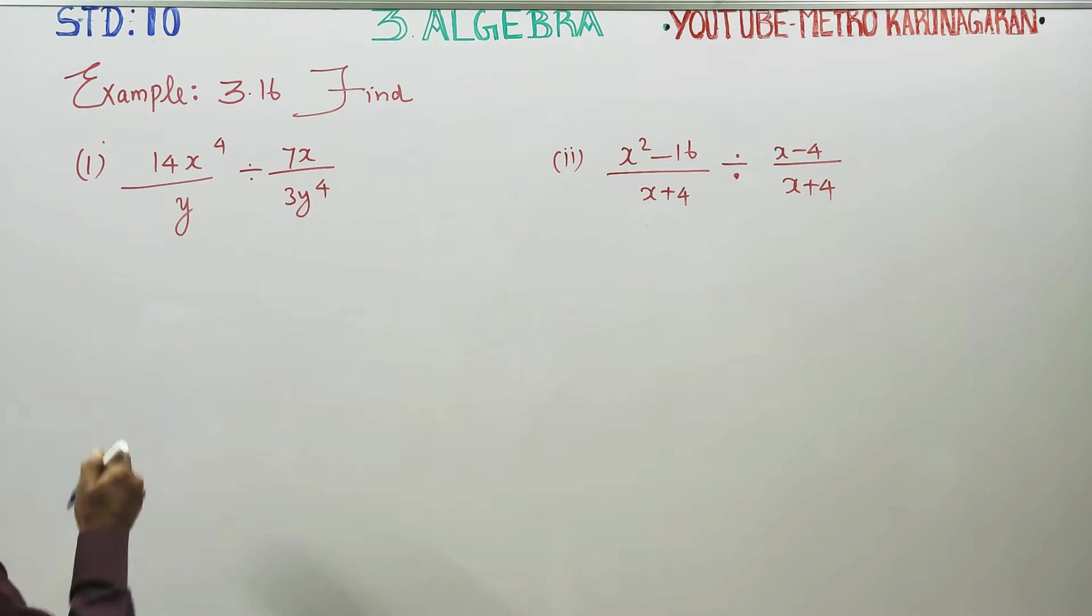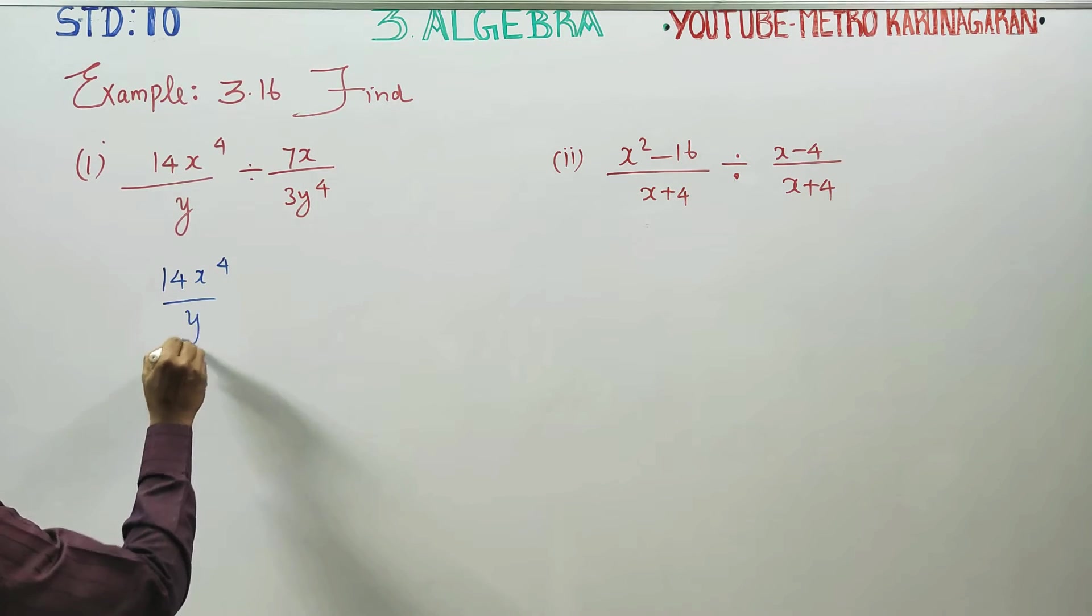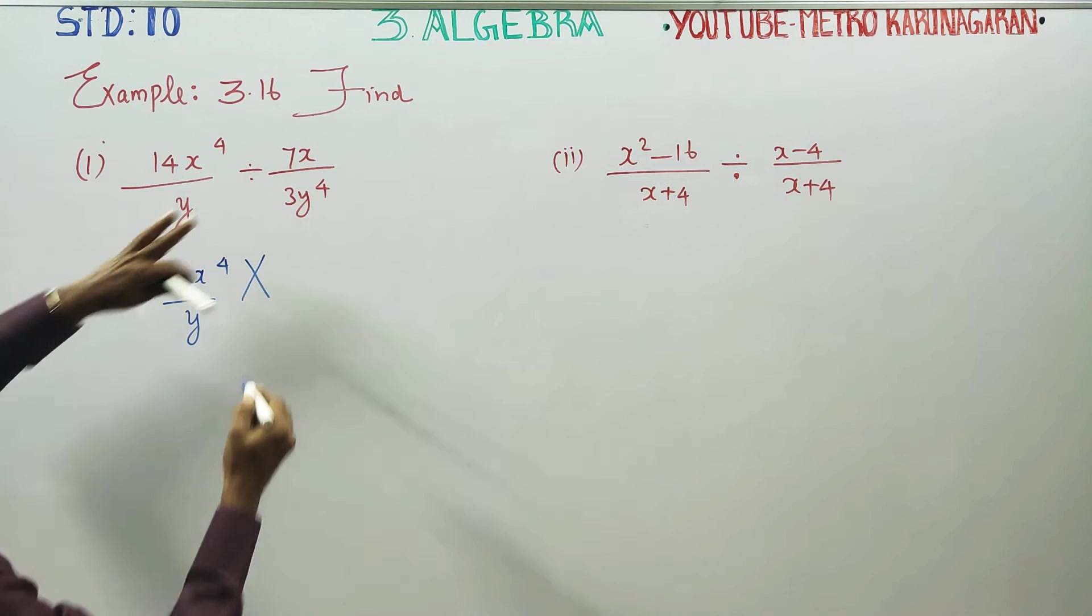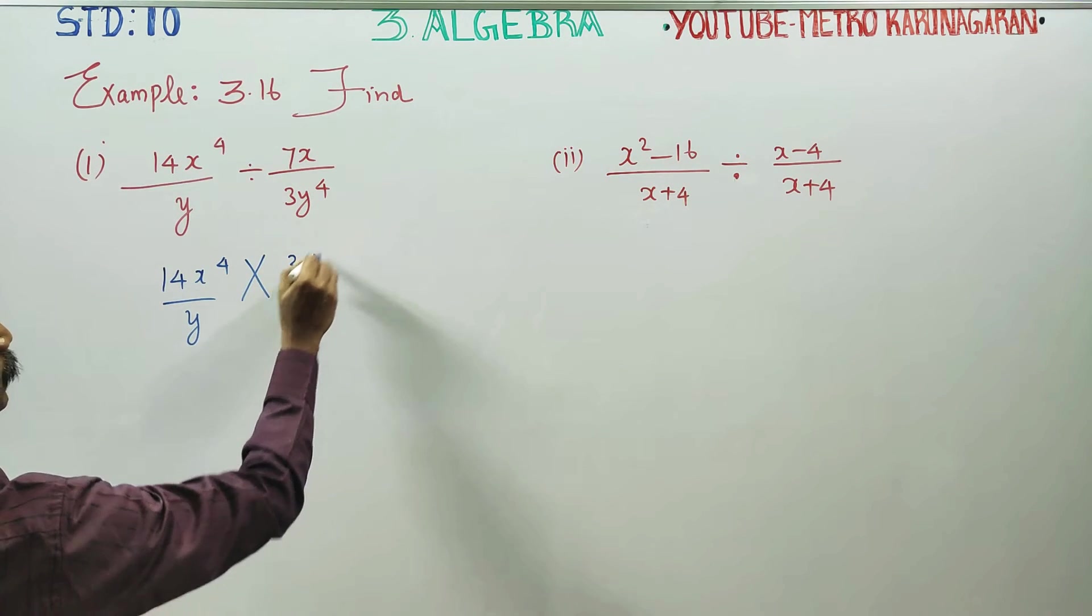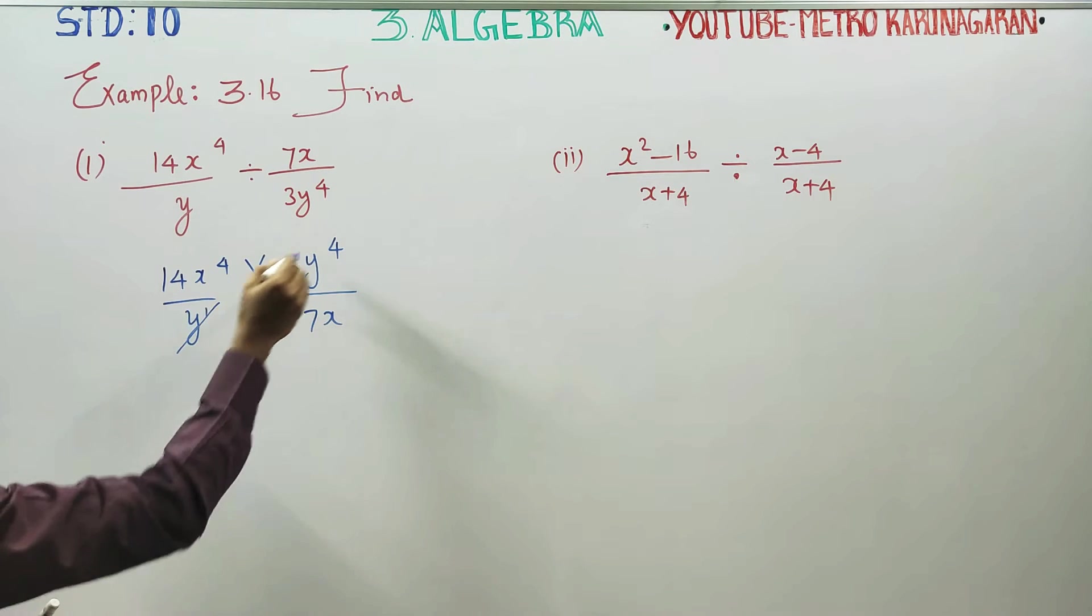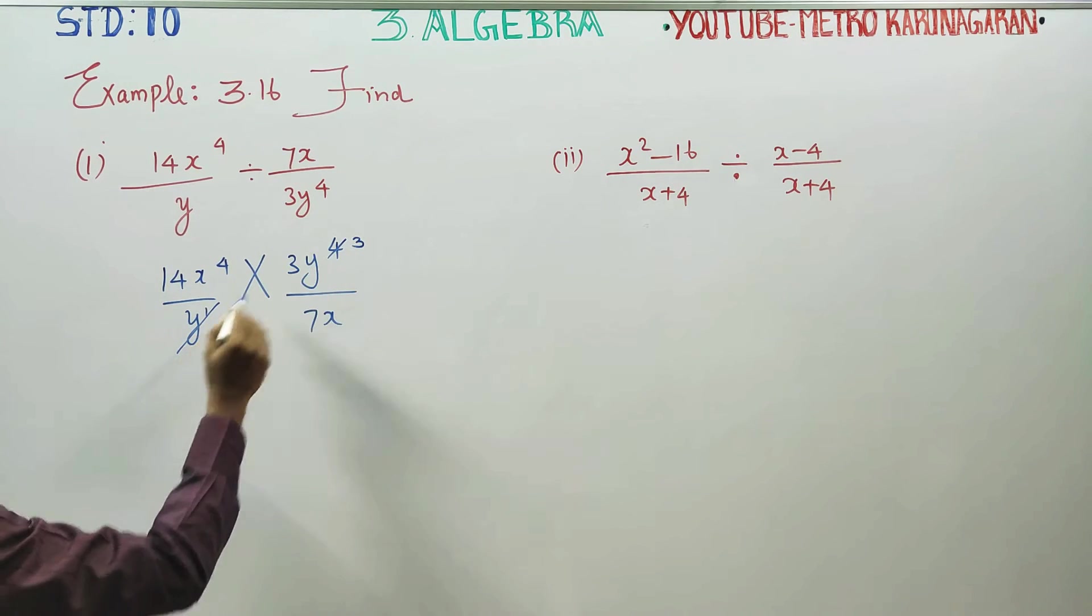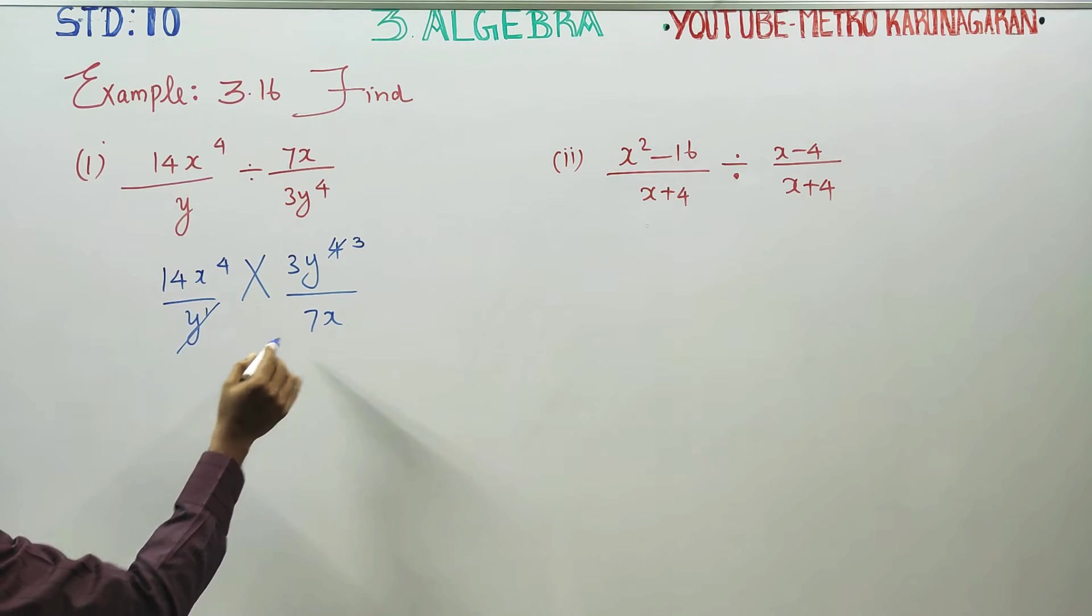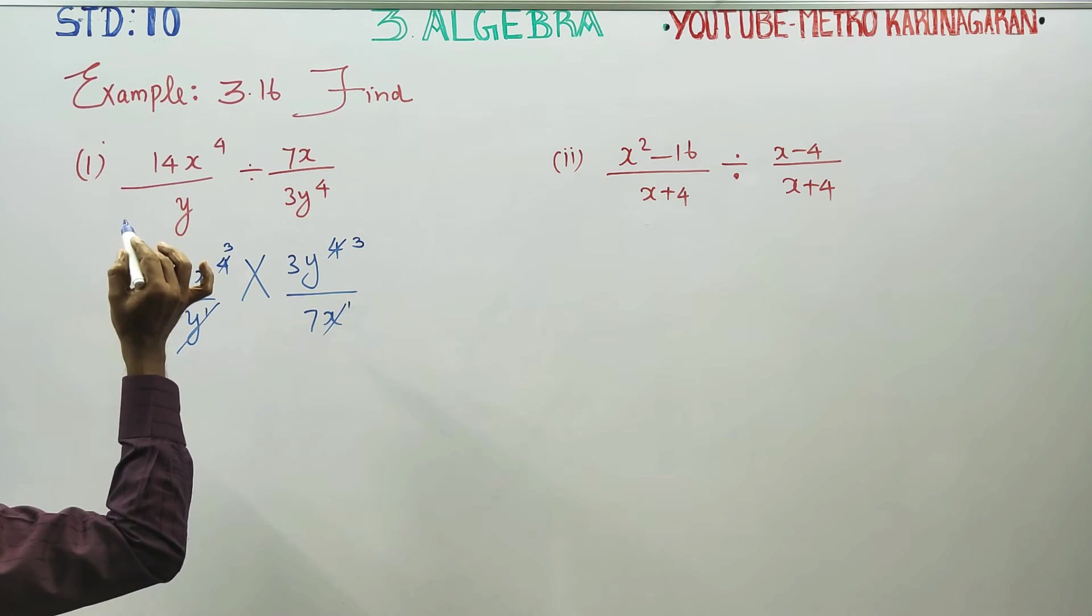Stage 1: For 14x^4/y divided by 7x/3y^4, multiply by the reciprocal. y power 1 cancel - 4 minus 1 is 3. For division, powers subtract. x power 1 cancel - 4 minus 1 is 3.